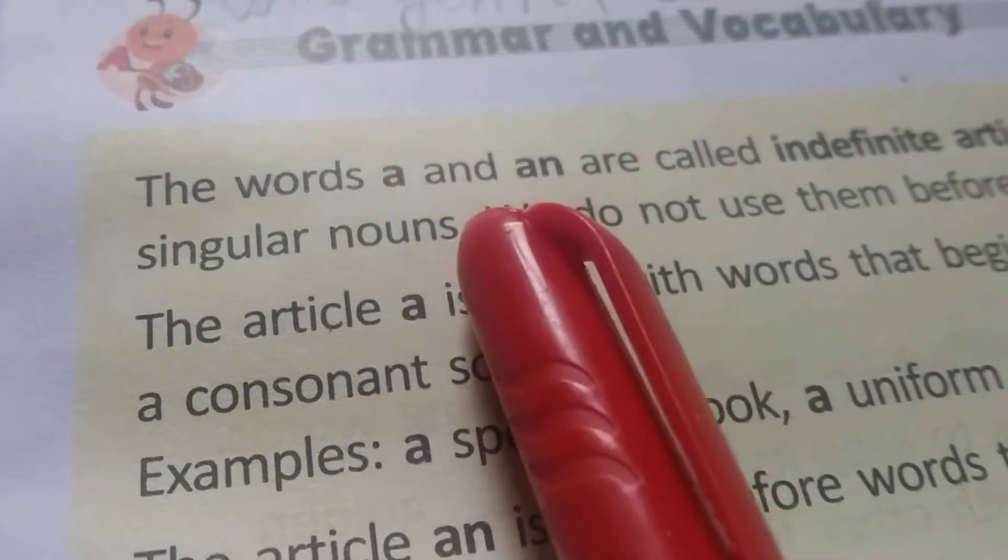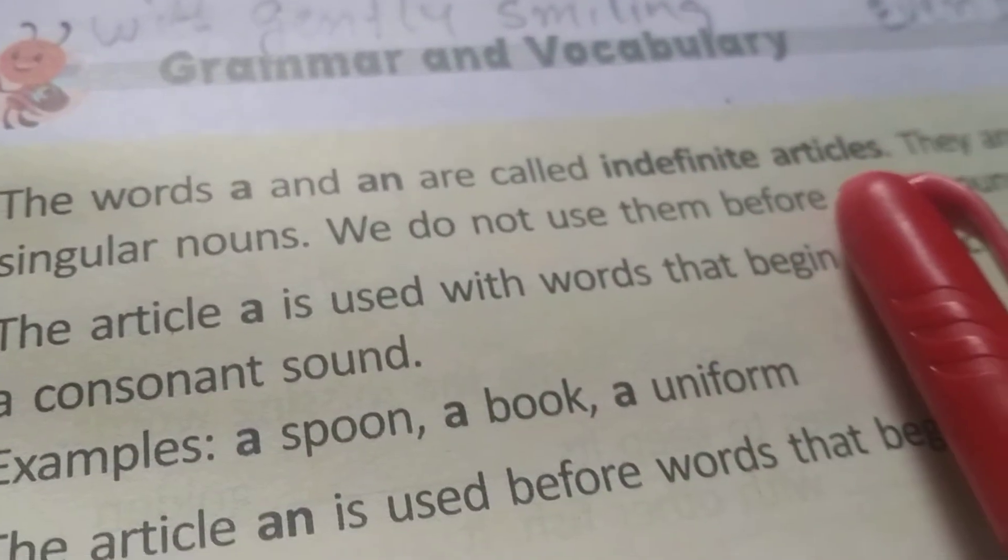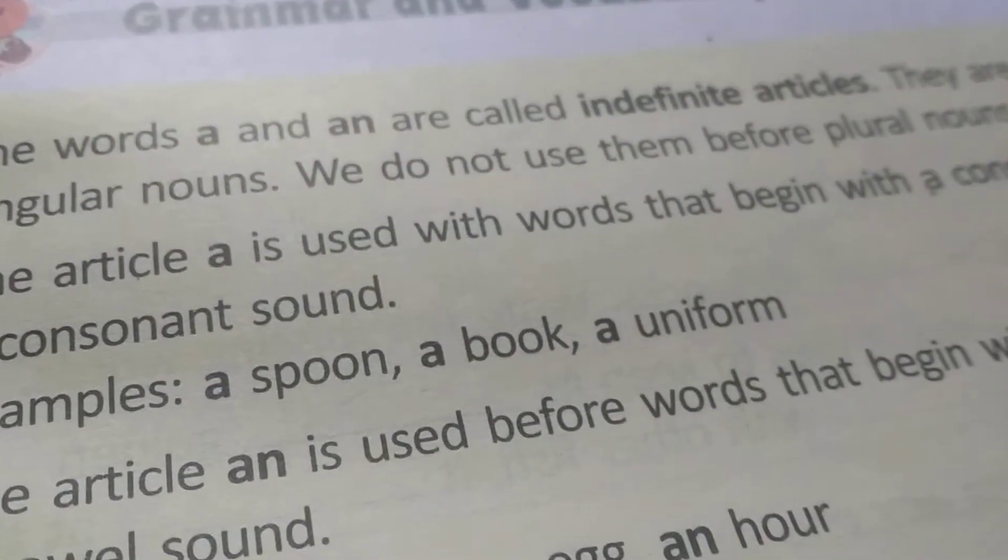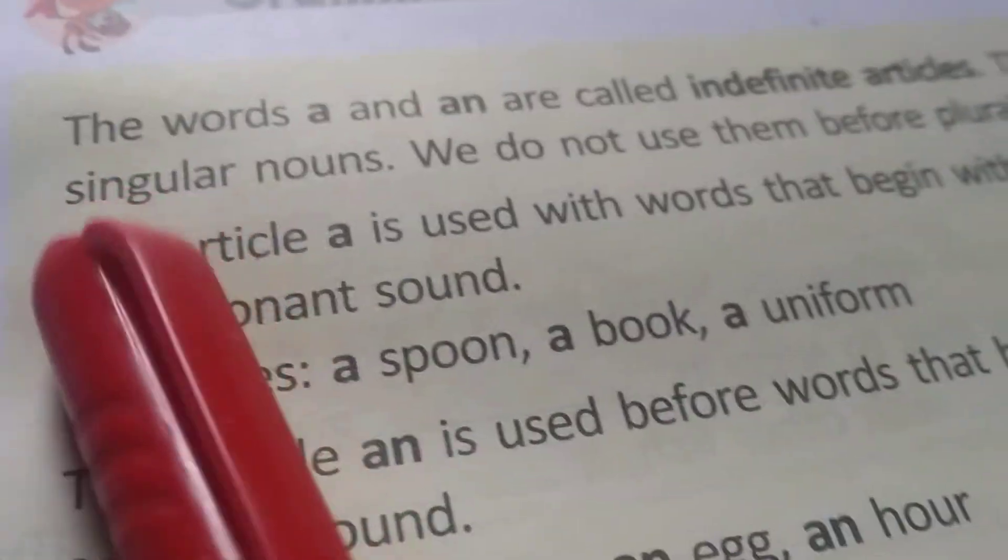The words a and an are called indefinite articles. The indefinite article means we are using them before nouns. They are used before singular nouns. So they are used before singular nouns.